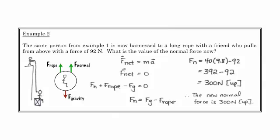The new normal is 300 newtons, which is less than what we got in example one. And that's expected. The box doesn't have to supply as much force to keep the person in place, because the rope is helping with that.